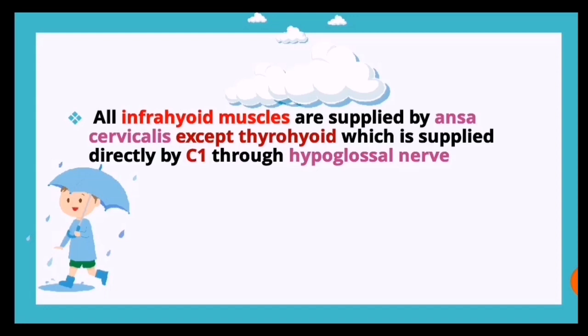An important point to note: all the infrahyoid muscles are supplied by the ansa cervicalis, except for one exception - the thyrohyoid, which is supplied directly by C1 through the hypoglossal nerve.